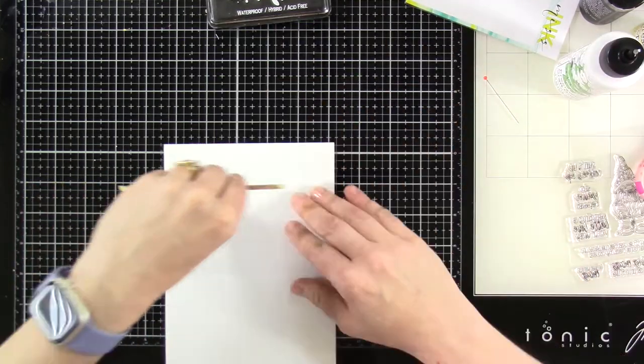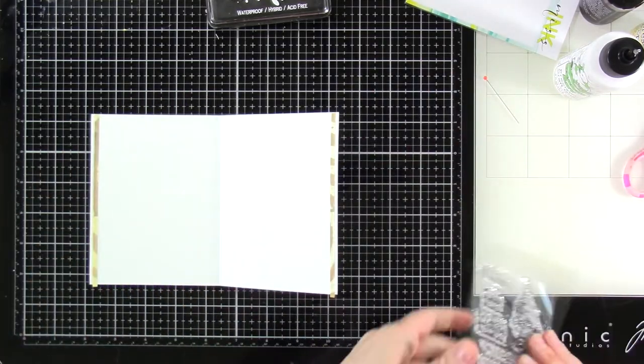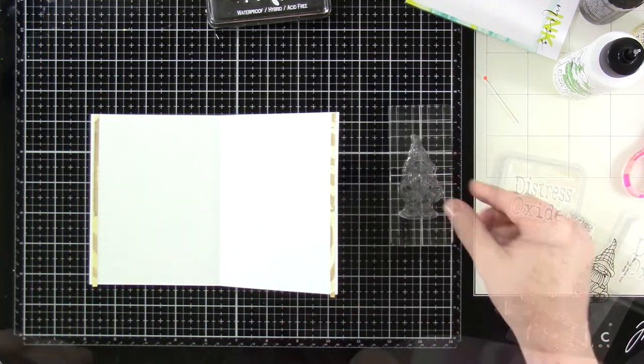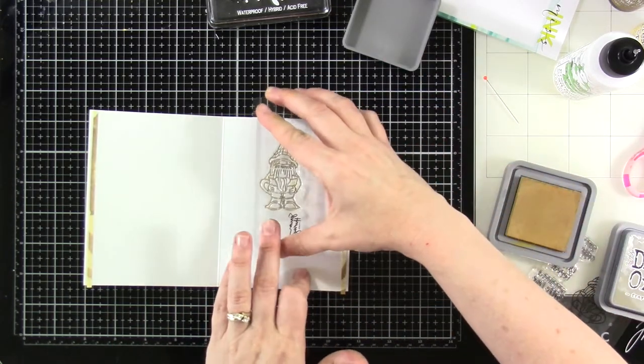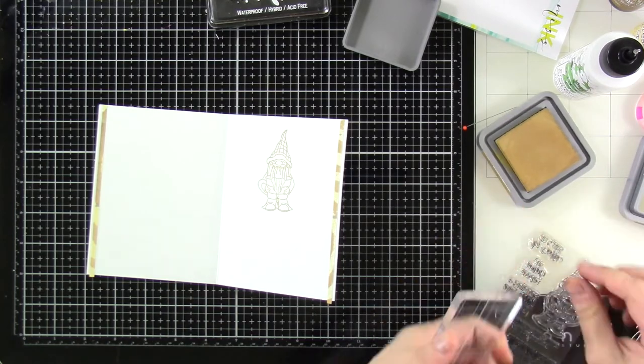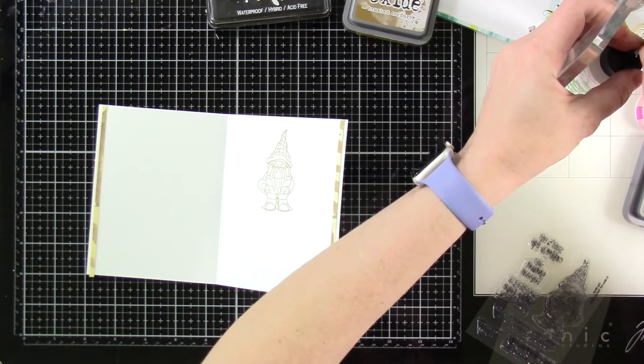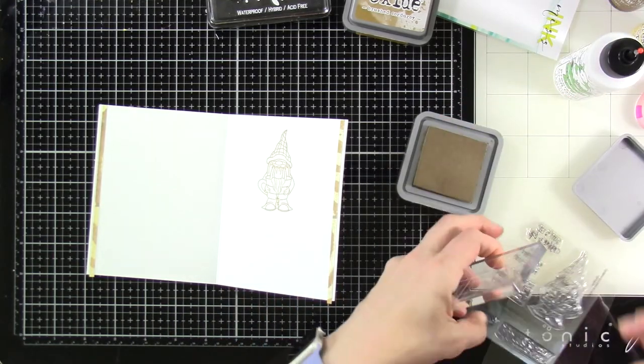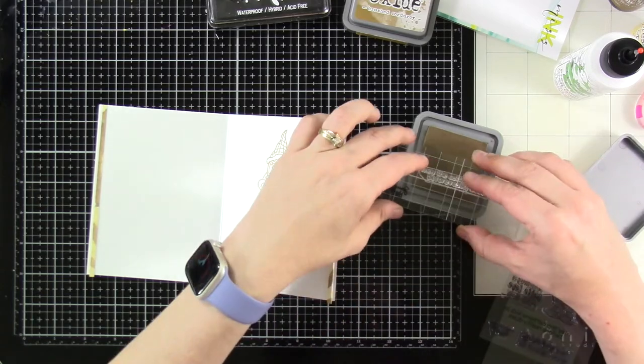But I'm going to bring in some Distress Oxide stamp pads. Those are formulated way better for actual stamping than the Distress inks themselves. So we're going to pull in that first color, which I believe is the Frayed Burlap. No, that's the Brush Corduroy. That's right. The Frayed Burlap is darker. And we're going to bring in that Frayed Burlap for our sentiment, which they're just so fun. I think that one's cute.